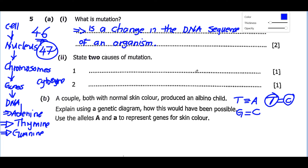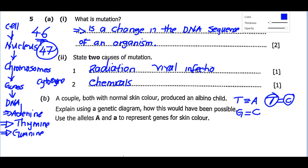We can now move on to question two: state two causes of mutation. Mutation can be caused by: first, exposure to radiation; second, exposure to chemicals; and third, viral infections — that is, infections caused by a virus.